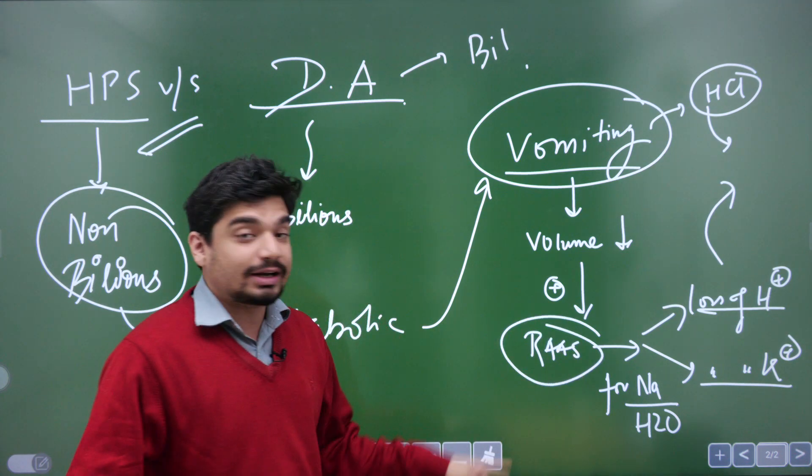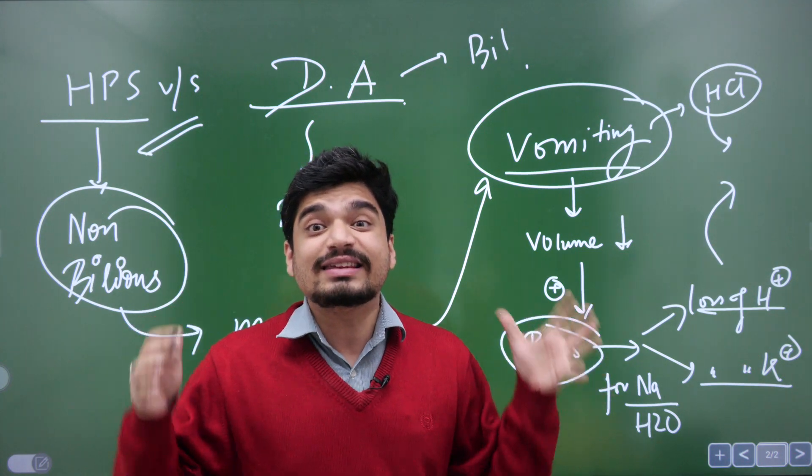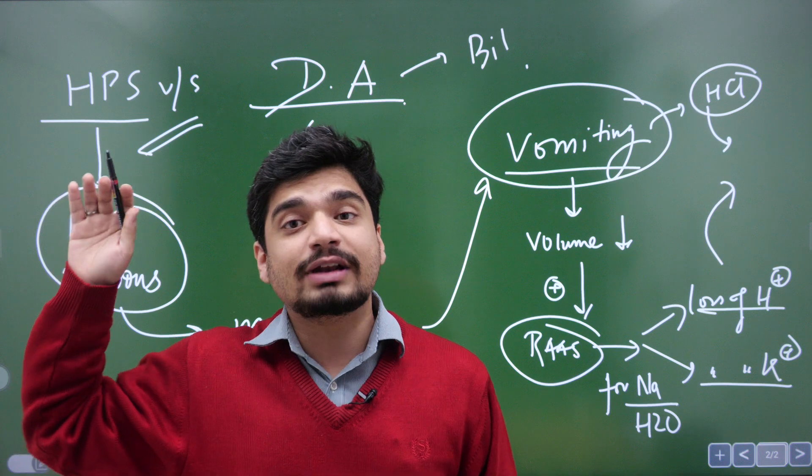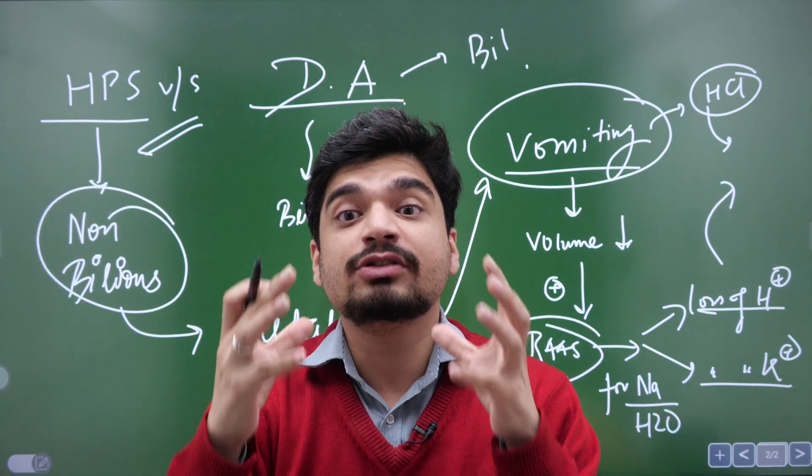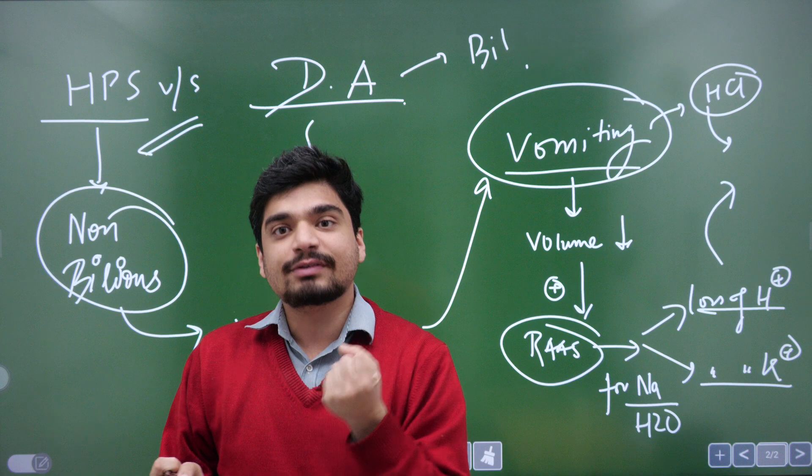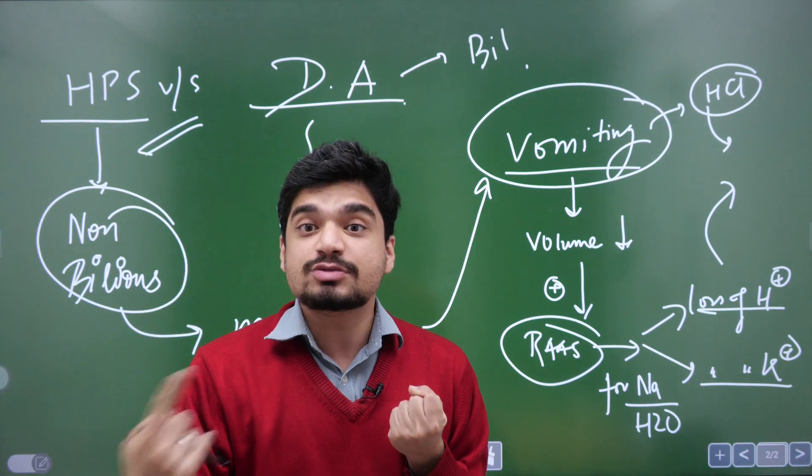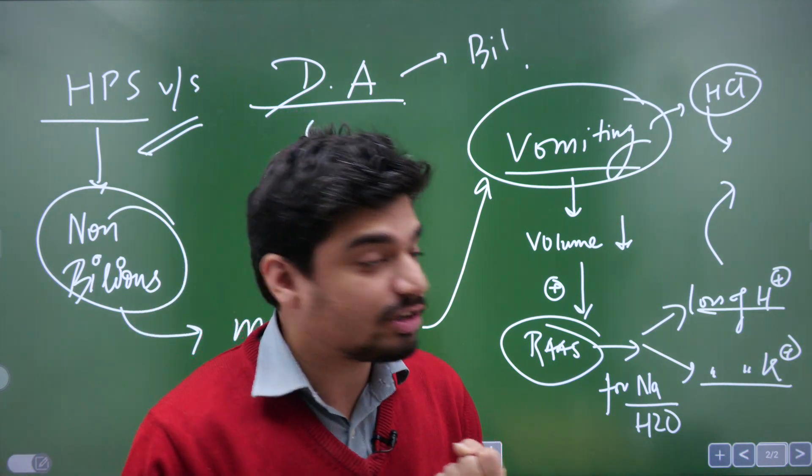And how does the body preserve water? The body preserves water by the activation of RAS. RAS will get activated and when RAS gets activated, it will release aldosterone. Aldosterone will act on kidney, preserving sodium and water. But when aldosterone acts and preserves sodium, it secretes out H+ ion and potassium ion.